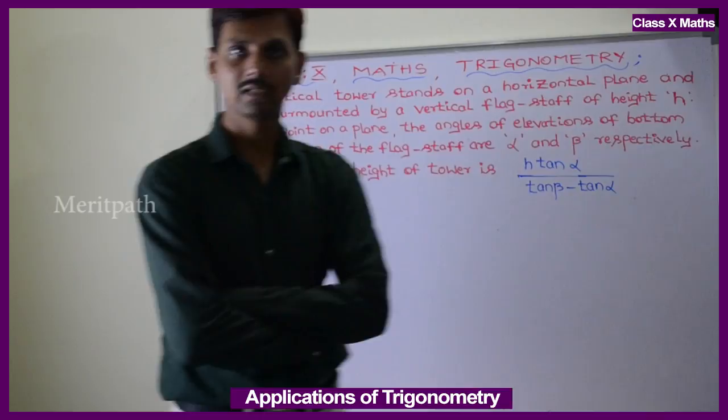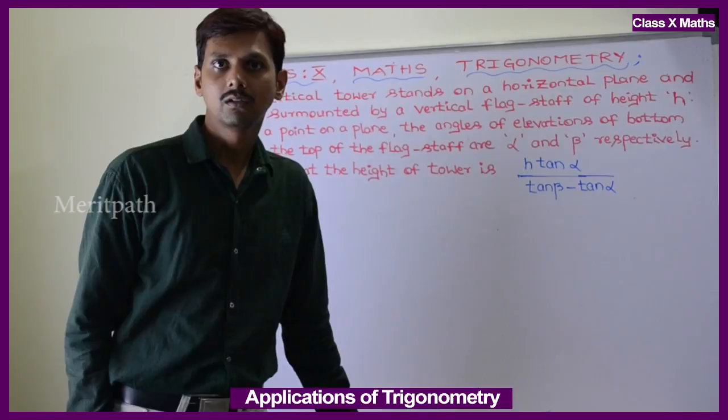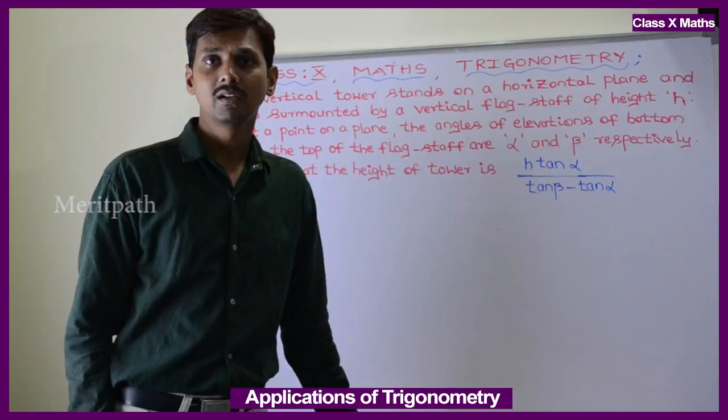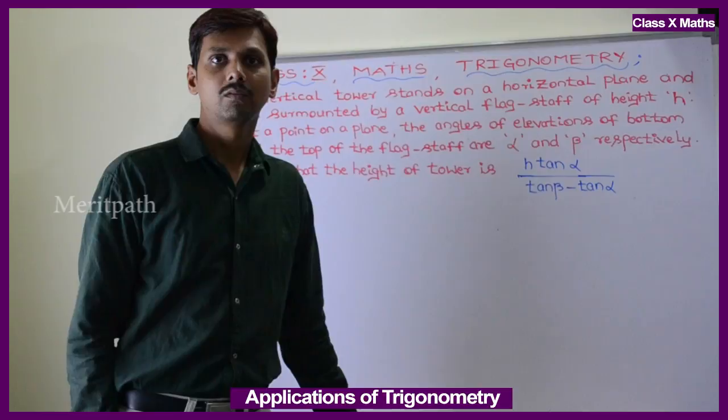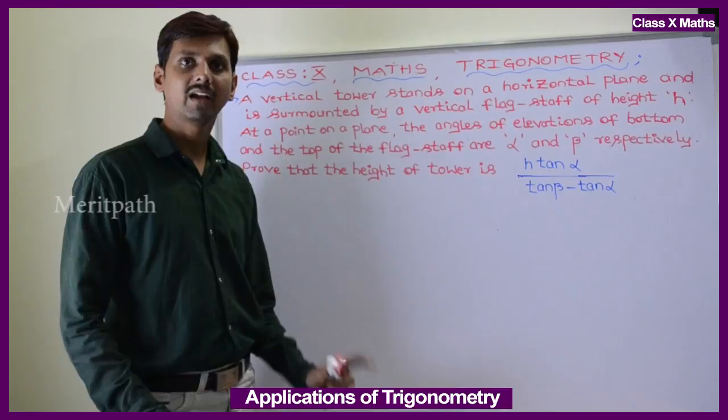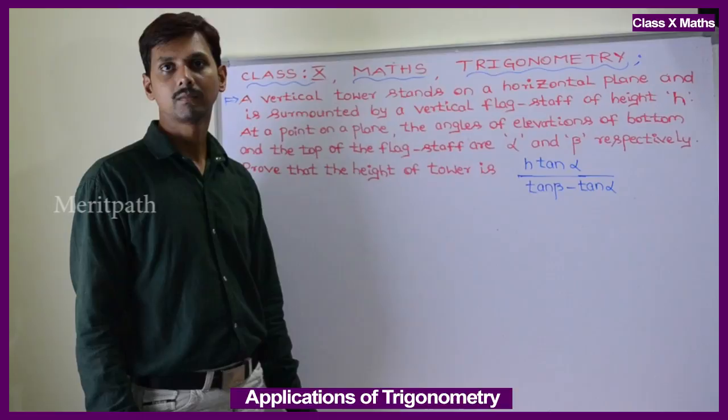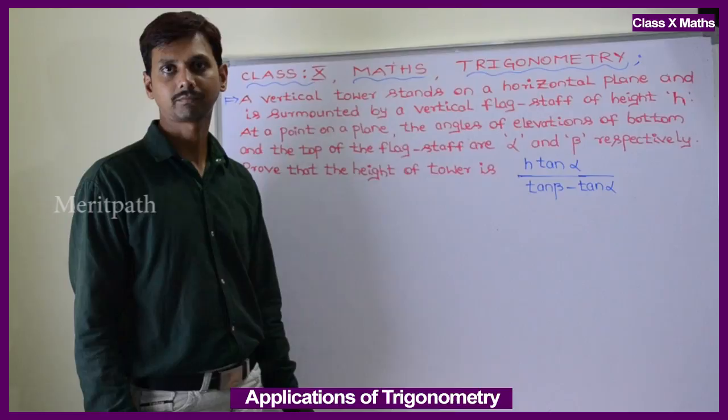There is a vertical tower, and the flagstaff is fixed on it. The bottom and the top of the flagstaff make angles of elevation alpha and beta respectively from a point. We need to find out that the height of the tower is H·tan α / (tan β − tan α).